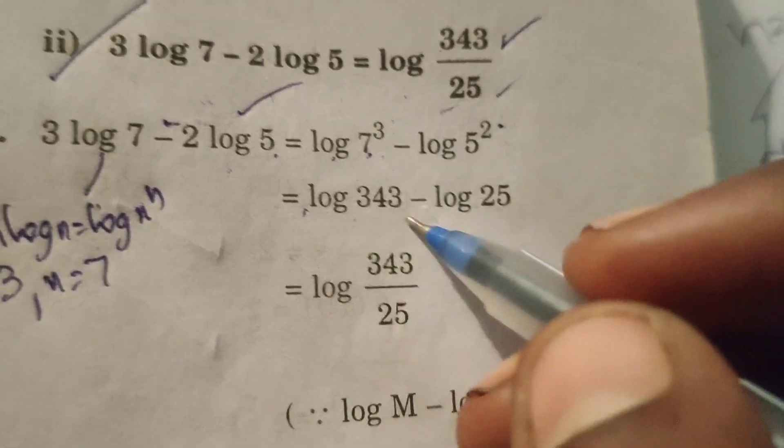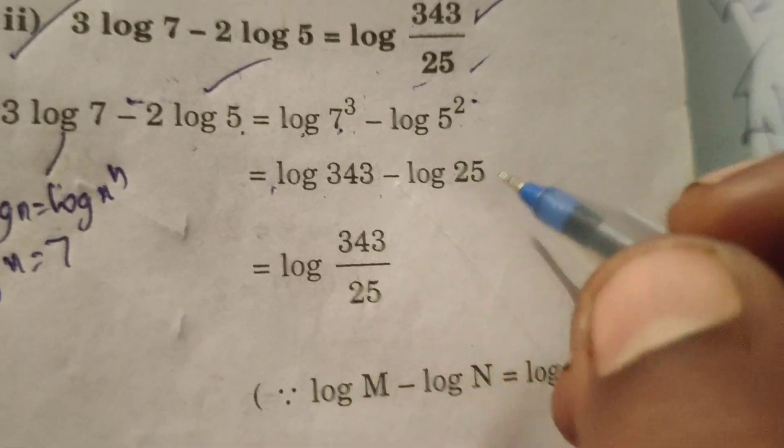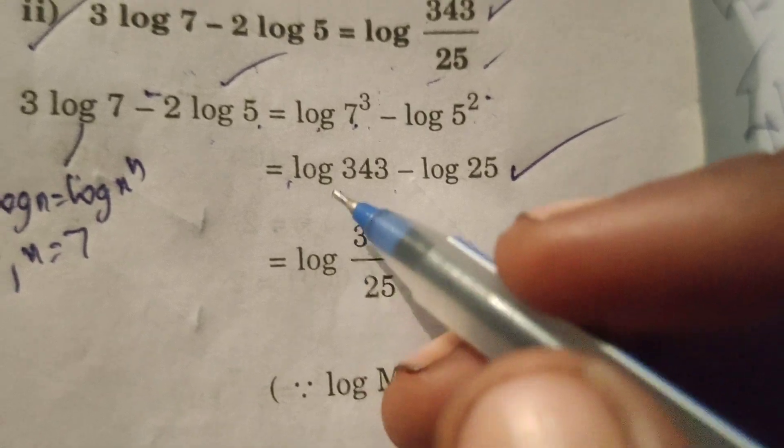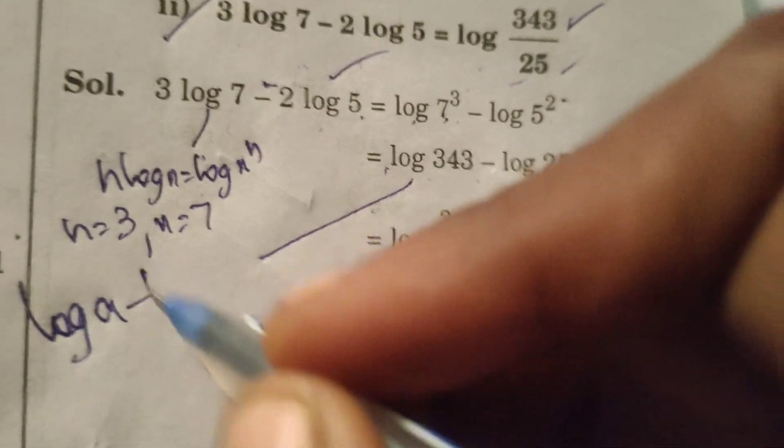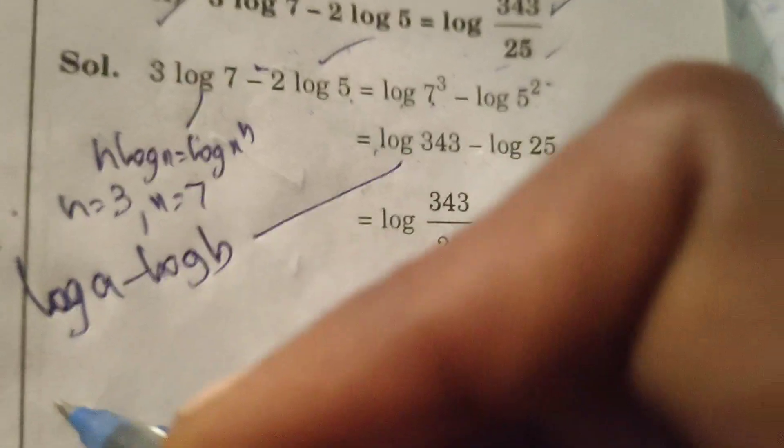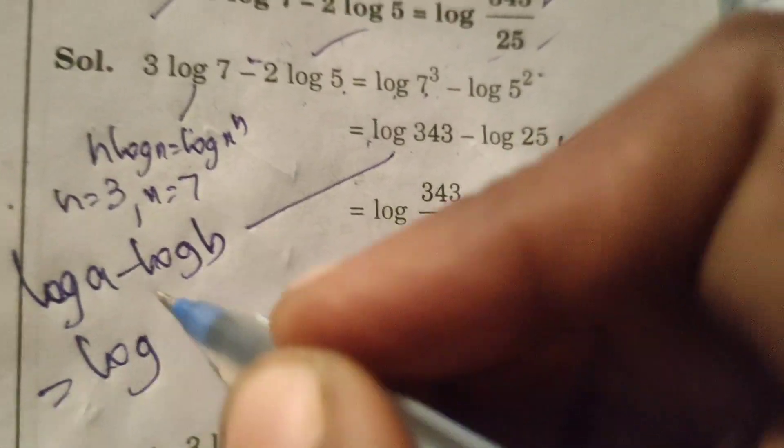Log 7 cube means log 343 minus log 5 square means log 25. Again applying the formula log a minus log b, that is log a by b.